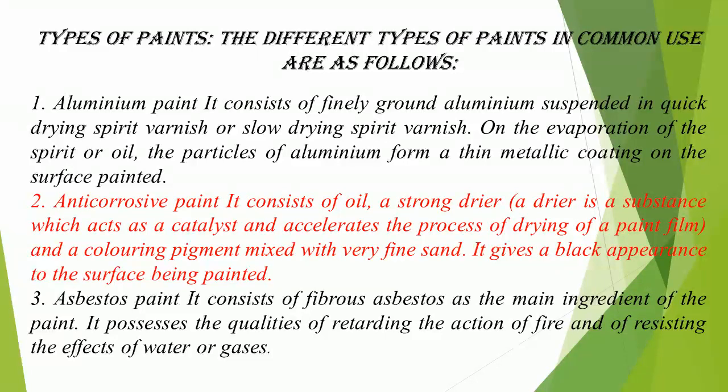Types of paints: 1. Aluminium paint: It consists of finely ground aluminum suspended in quick-drying or slow-drying spirit varnish. On evaporation of the spirit or oil, the particles of aluminum form a thin metallic coating on the surface painted. 2. Anti-corrosive paint: It consists of oil and a strong dryer — a dryer is a substance which acts as a catalyst and accelerates the process of drying of a paint film — and a coloring pigment mixed with very fine sand. It gives a black appearance to the surface being painted.